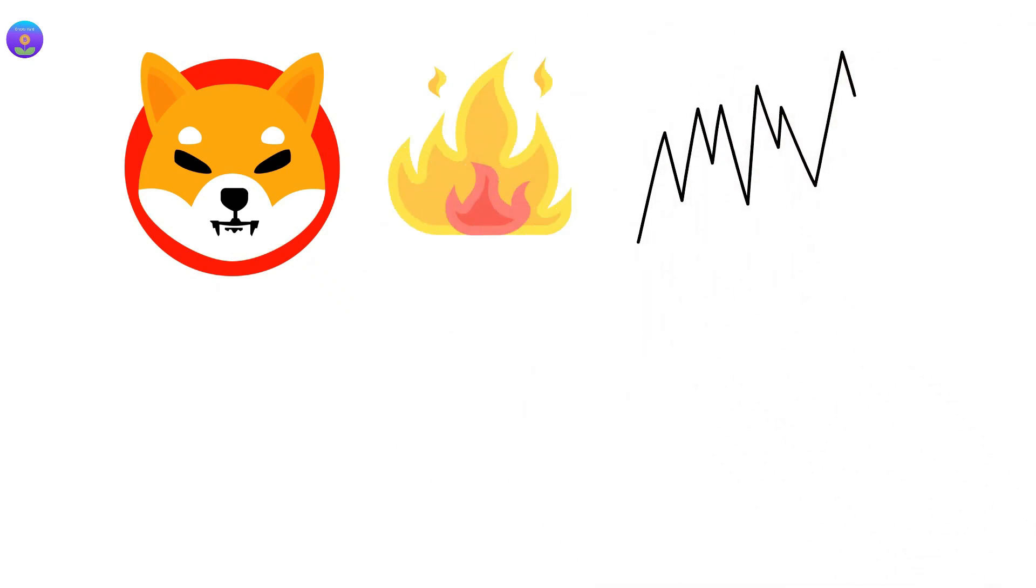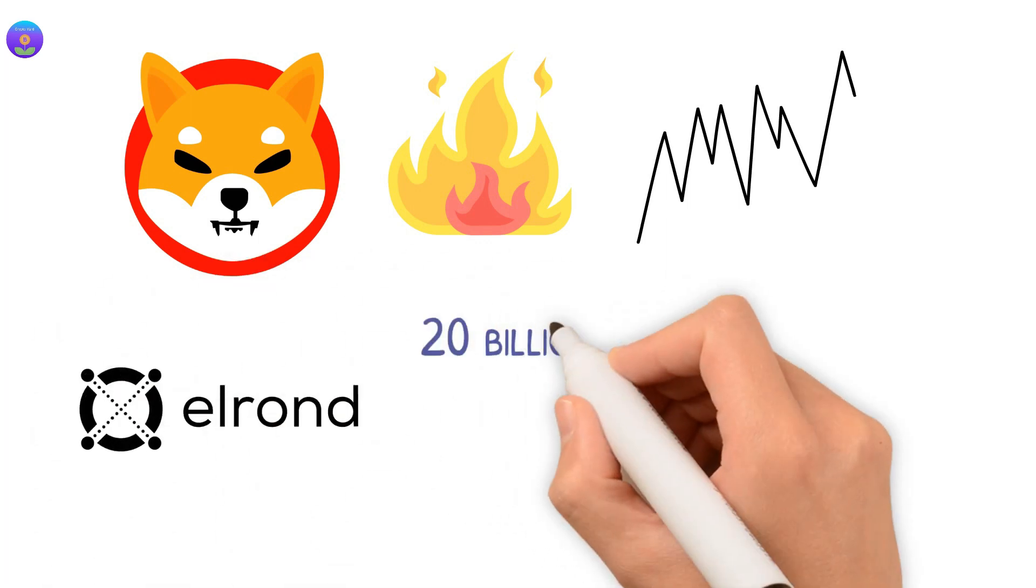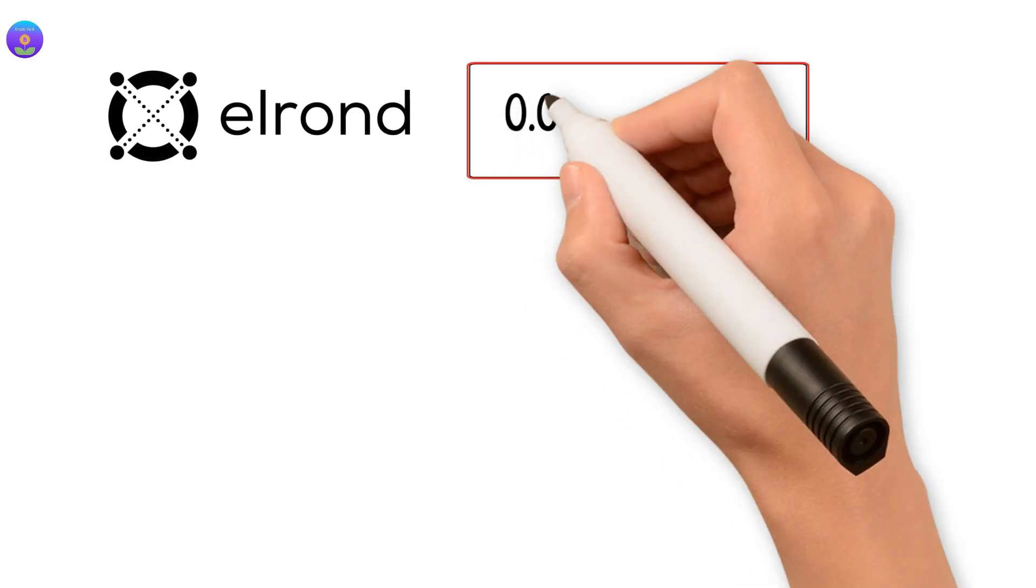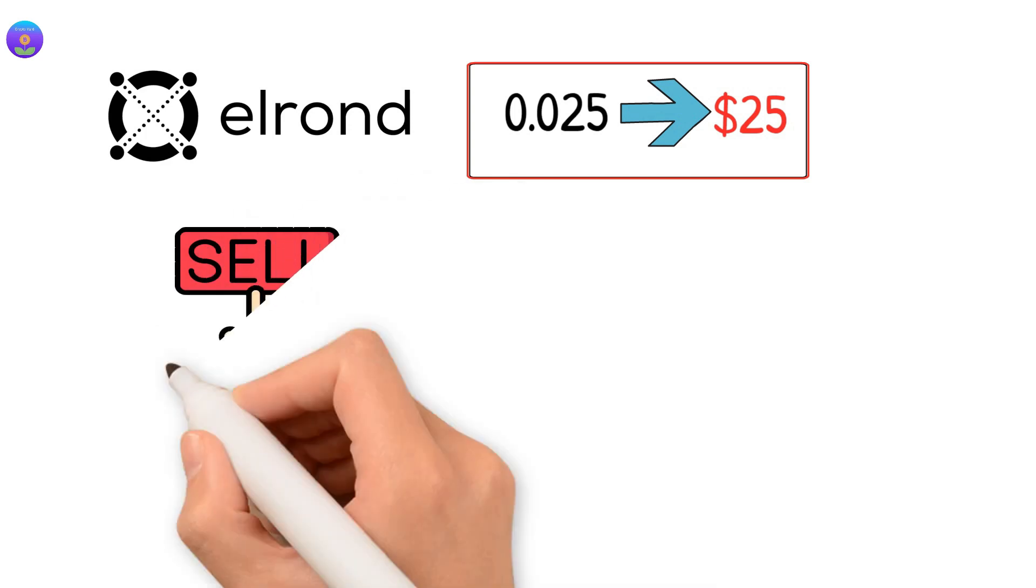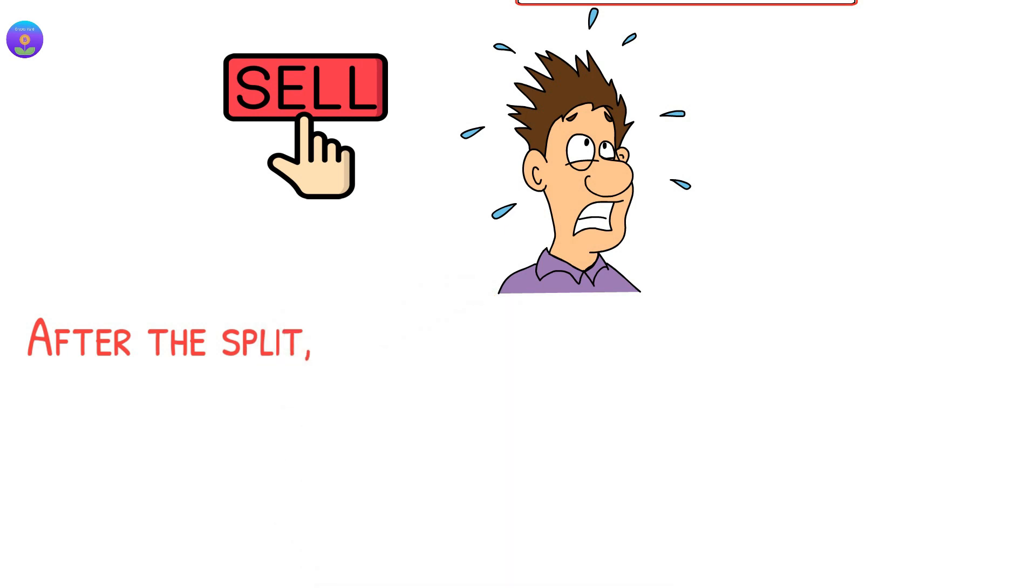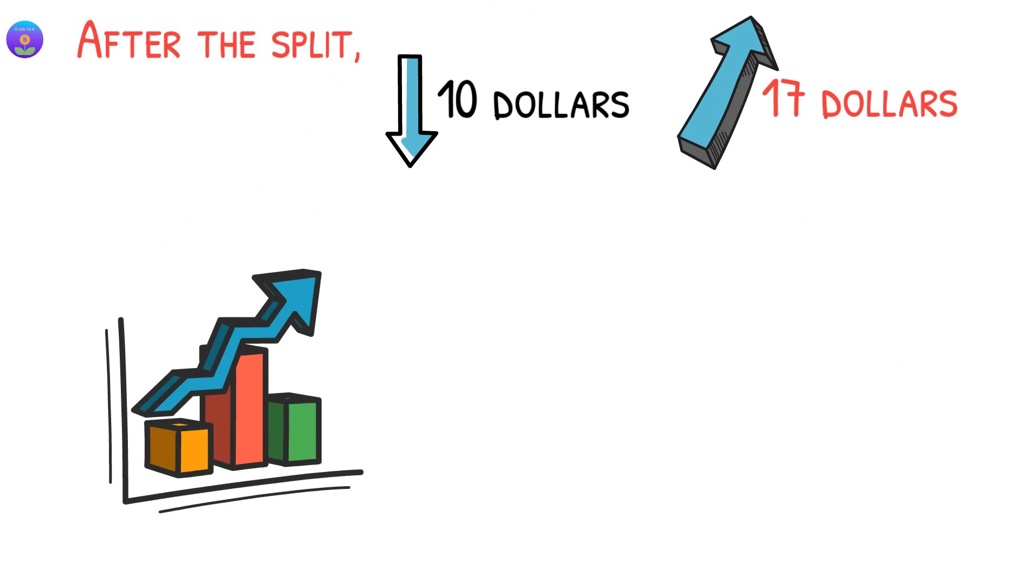There are many coins that followed the reverse split technique. For example, Elrond has replaced twenty billion tokens with twenty million mainnet tokens at a rate of one thousand to one. The price of Elrond went from $0.025 to twenty-five dollars. Many holders have sold their tokens as they thought they got scammed. After the split, the price went down to ten dollars and then went up to seventeen dollars until it reached one hundred and seventy-six dollars in February 2021. This was an increase of seven hundred and four percent, which would be the same if the price went from $0.025 to seven dollars before the split.